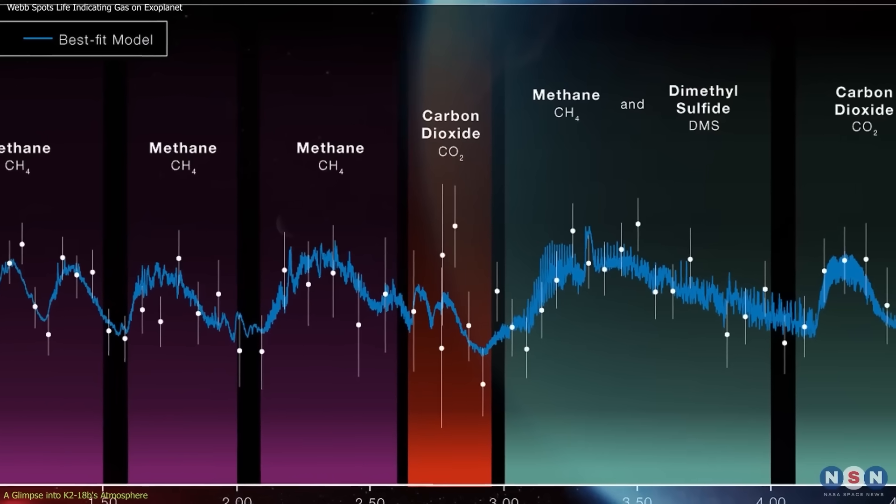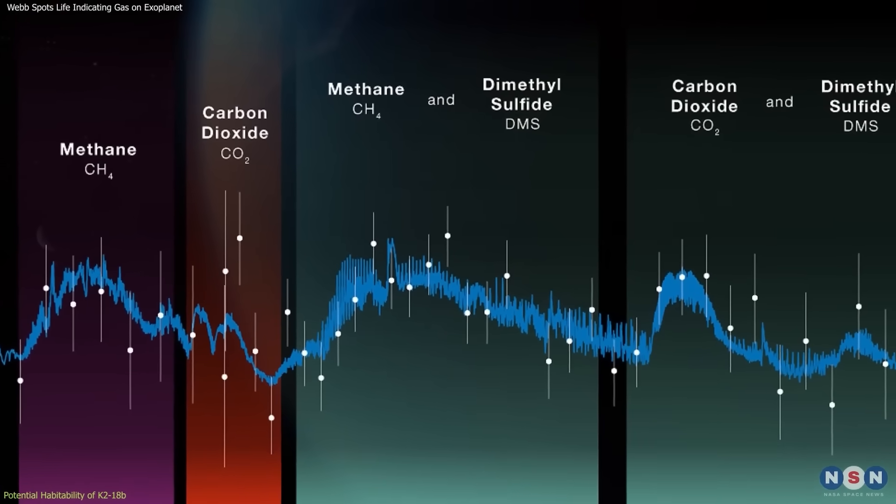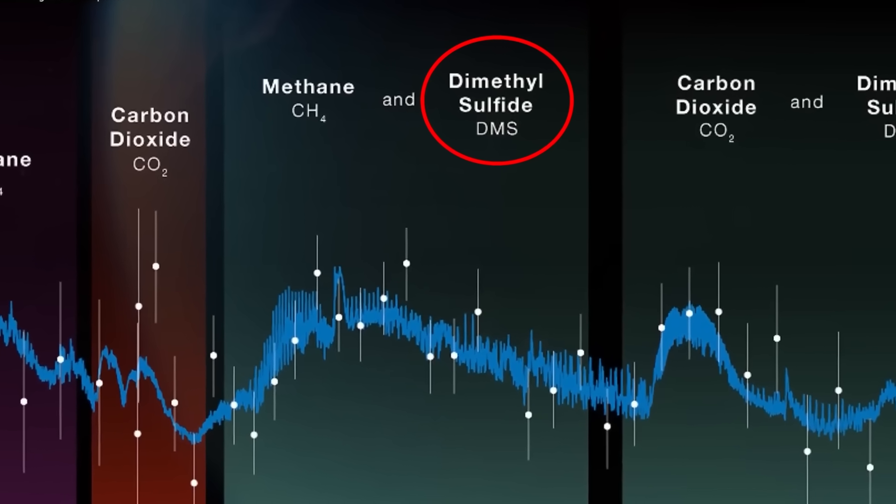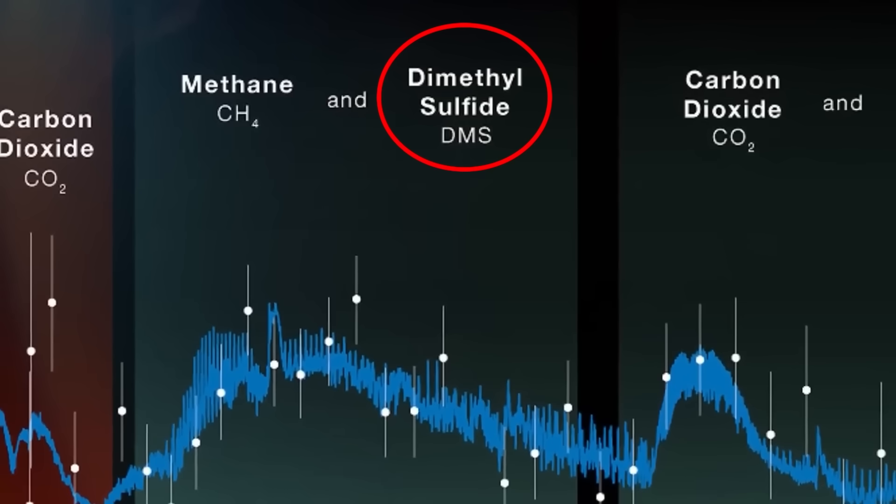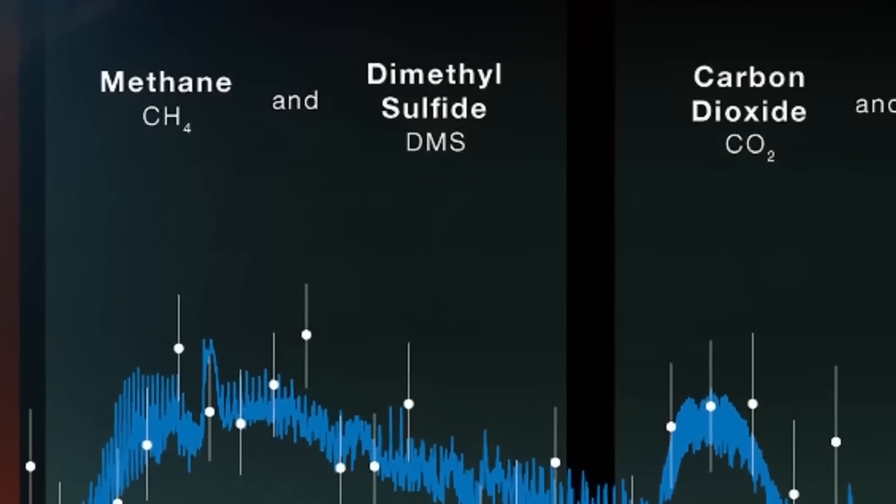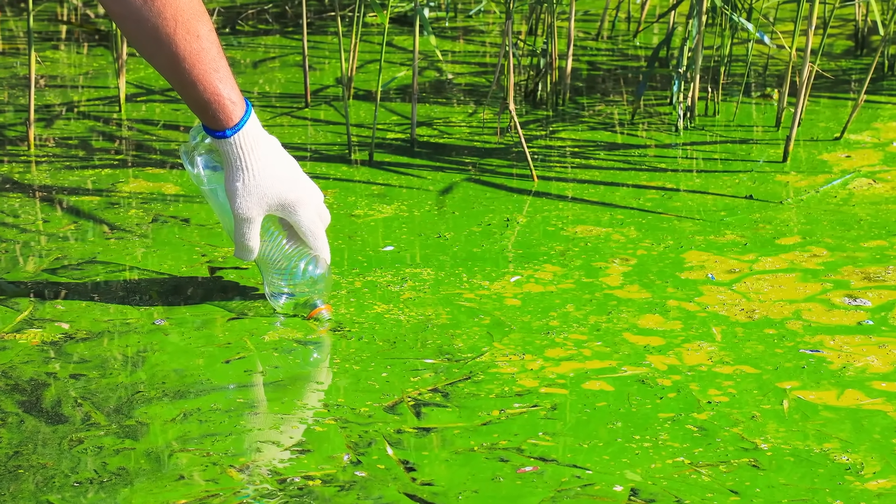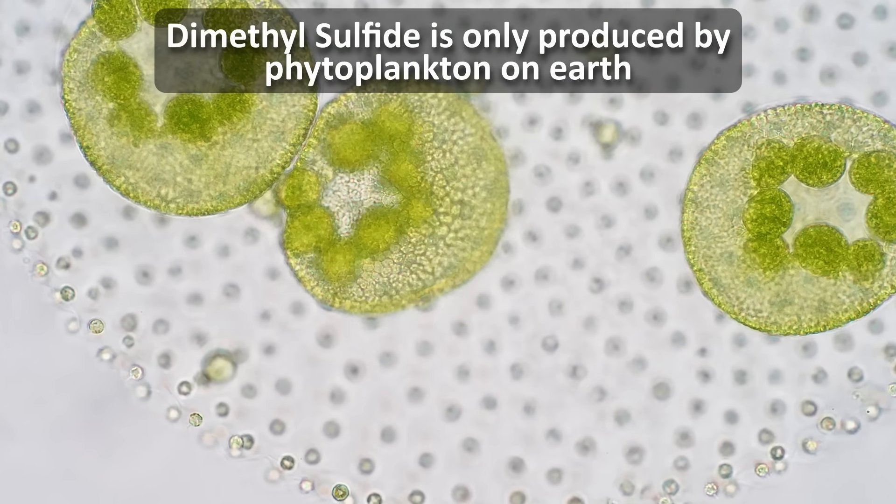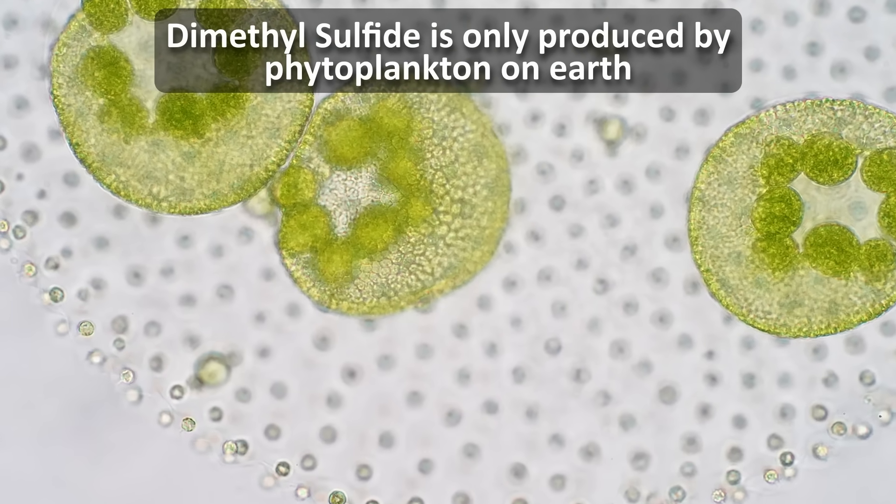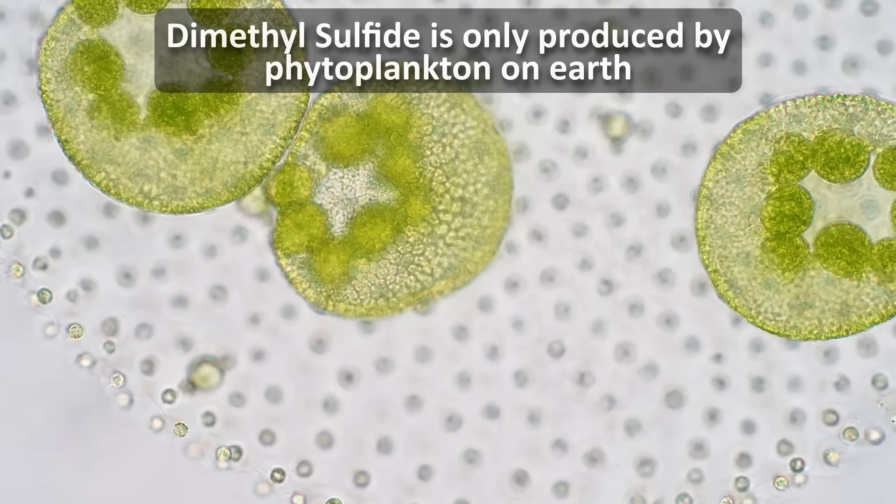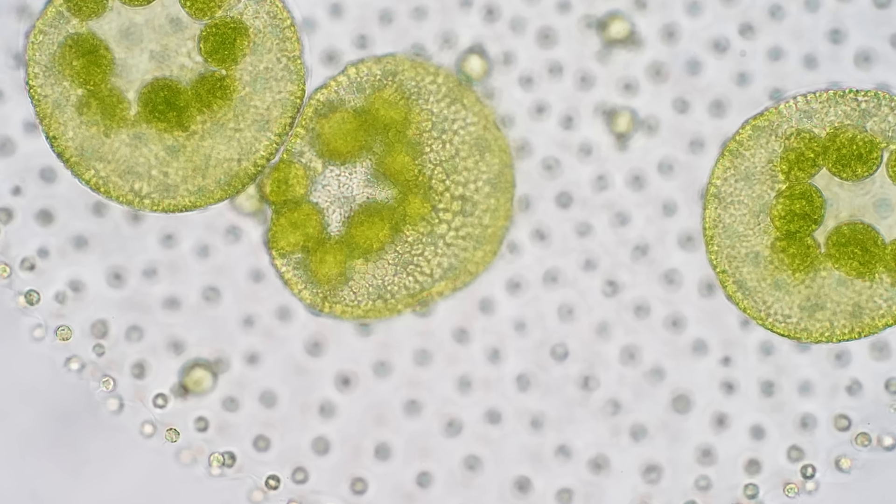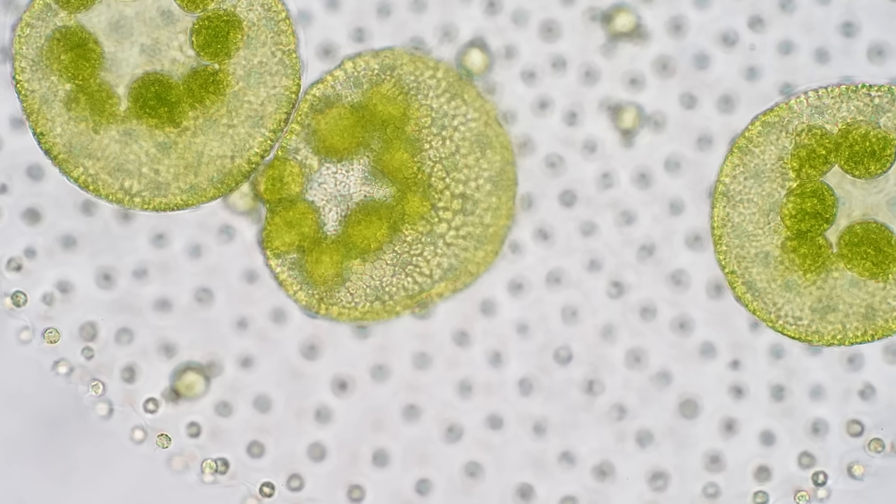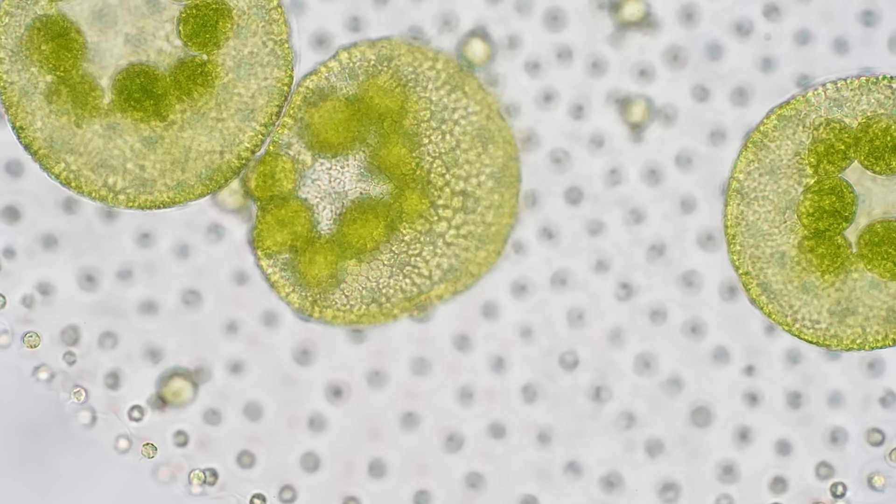Interestingly, the initial Webb observations also detected a molecule called dimethyl sulfide, DMS. On Earth, this is only produced by life. The bulk of the DMS in Earth's atmosphere is emitted from phytoplankton in marine environments. So this is very interesting because it indicates that there may be life on the planet. But it's also possible that it's produced naturally. We don't know yet. And this is a result from just a single exoplanet. But other studies on other exoplanets have also found different chemicals, which look interesting.